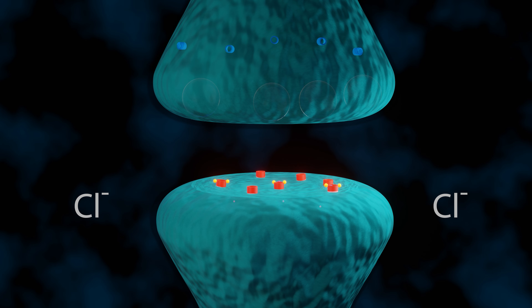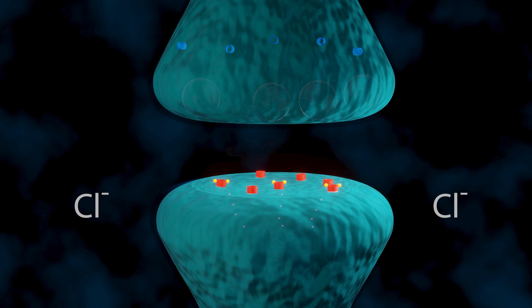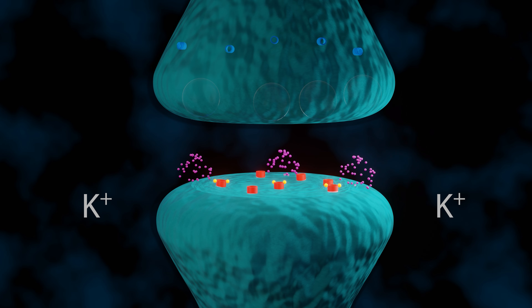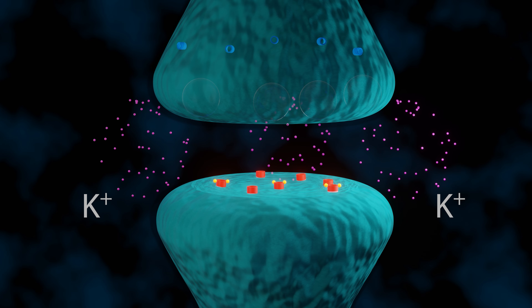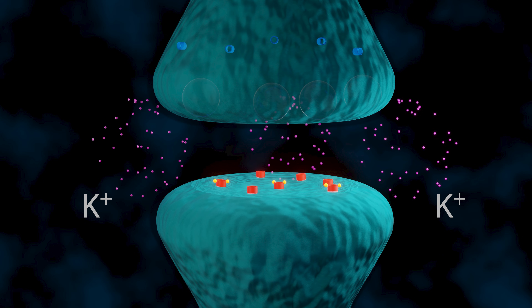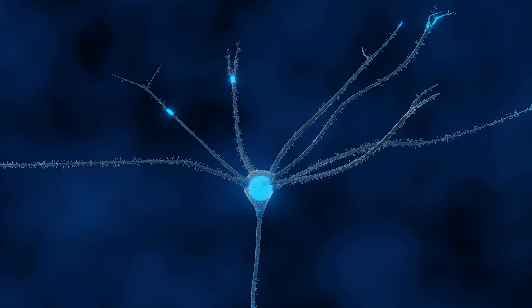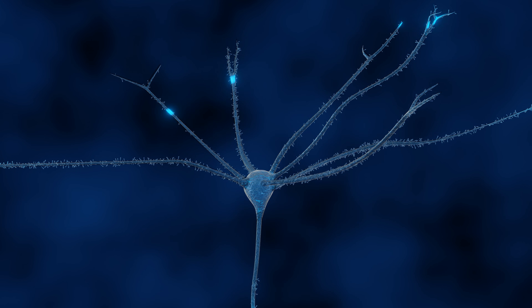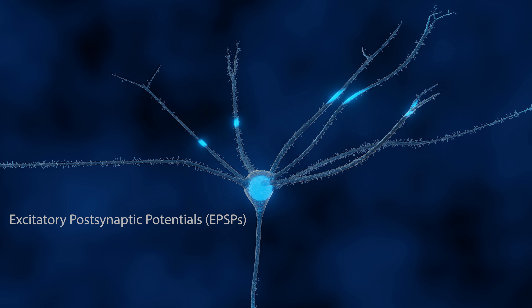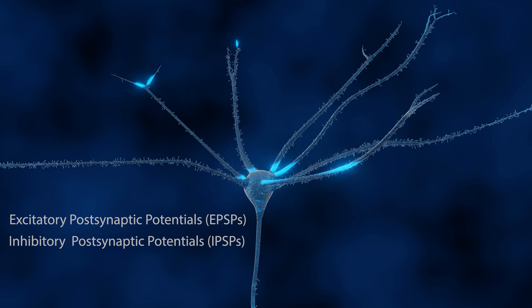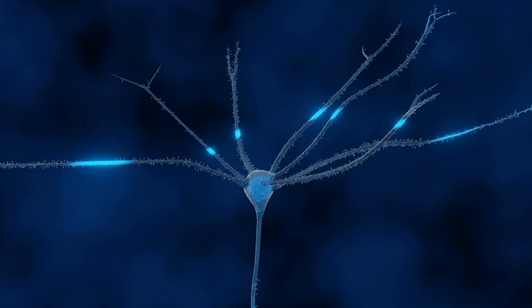If the channel allows negatively charged chlorine ions to pass, it makes the neuron less likely to fire, which is an inhibitory response. The channel opening could also cause positively charged potassium ions to leave the dendritic spine, which is also an inhibitory response. When the dendrite receives the ions, it does not create an action potential, which is how axons send electrical signals. Within the dendrites, the electrical signals are called excitatory postsynaptic potentials or inhibitory postsynaptic potentials.